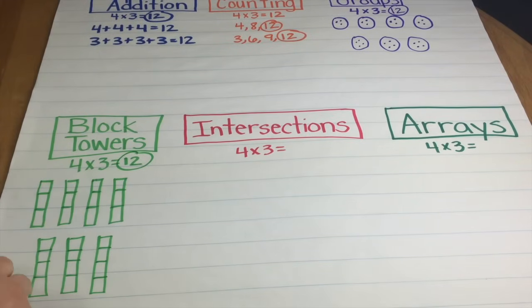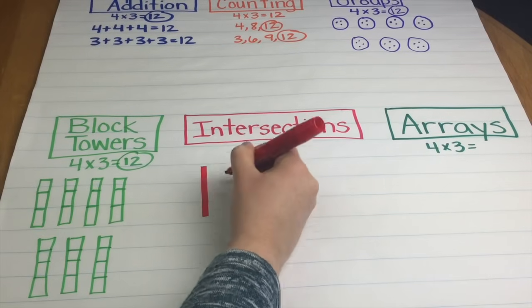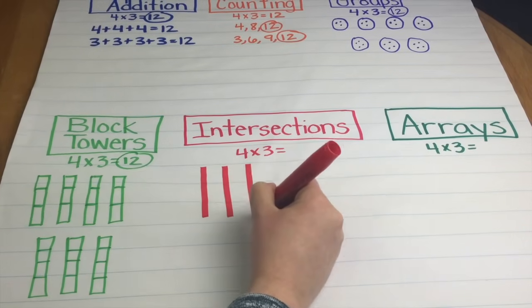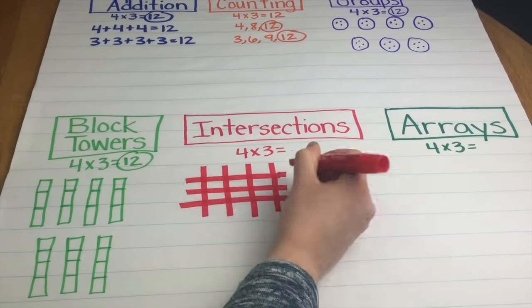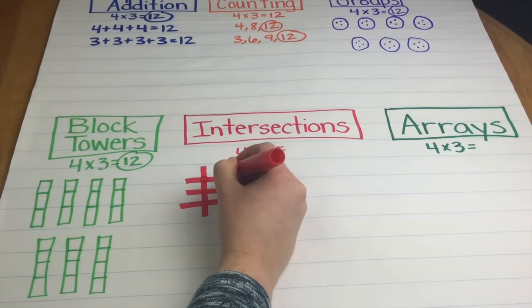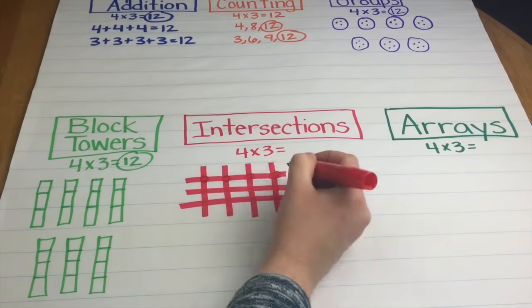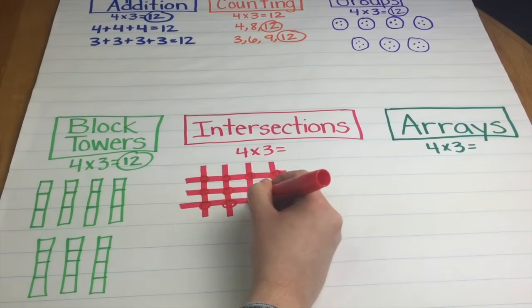The intersection strategy is a unique strategy that I have a lot of students actually like. I think it's the visual piece of this. For intersection strategy, I take the problem 4 times 3 and I could do 4 columns with 3 rows. And everywhere that the lines intersect, we count: 1, 2, 3, 4, 5, 6, 7, 8, 9, 10, 11, 12.